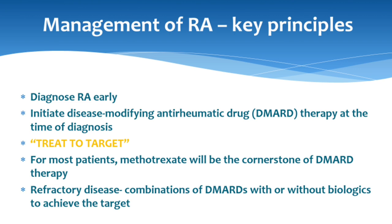Treat-to-target is very important — you are aiming for low disease activity or remission, so you have a target in mind and treat accordingly. For most patients, methotrexate will be the cornerstone of DMARD therapy; it is the key drug, the bread and butter of a rheumatologist. In refractory disease, you need combinations of DMARDs with or without biologics to achieve the target.